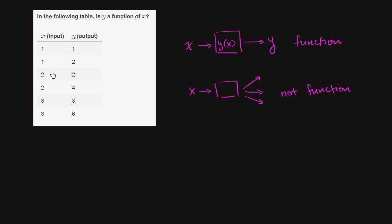So let's think about this table right over here. When x is equal to 1, we get y is equal to 1. But when x is equal to 1 again, all of a sudden y is equal to 2.